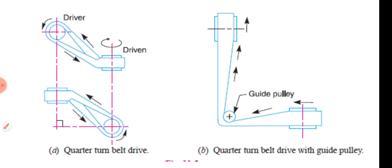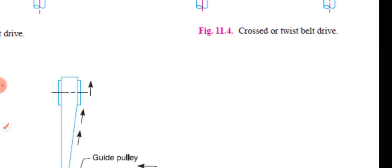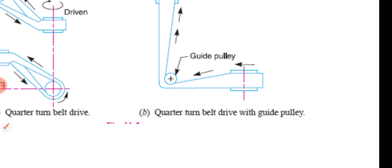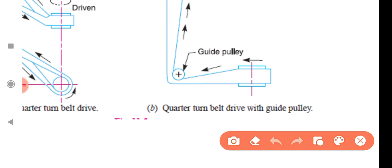Quarter turn belt drive. The guide pulley is used to increase the tension in the belt. The purpose of the gear or guide pulley is to cover a larger distance.